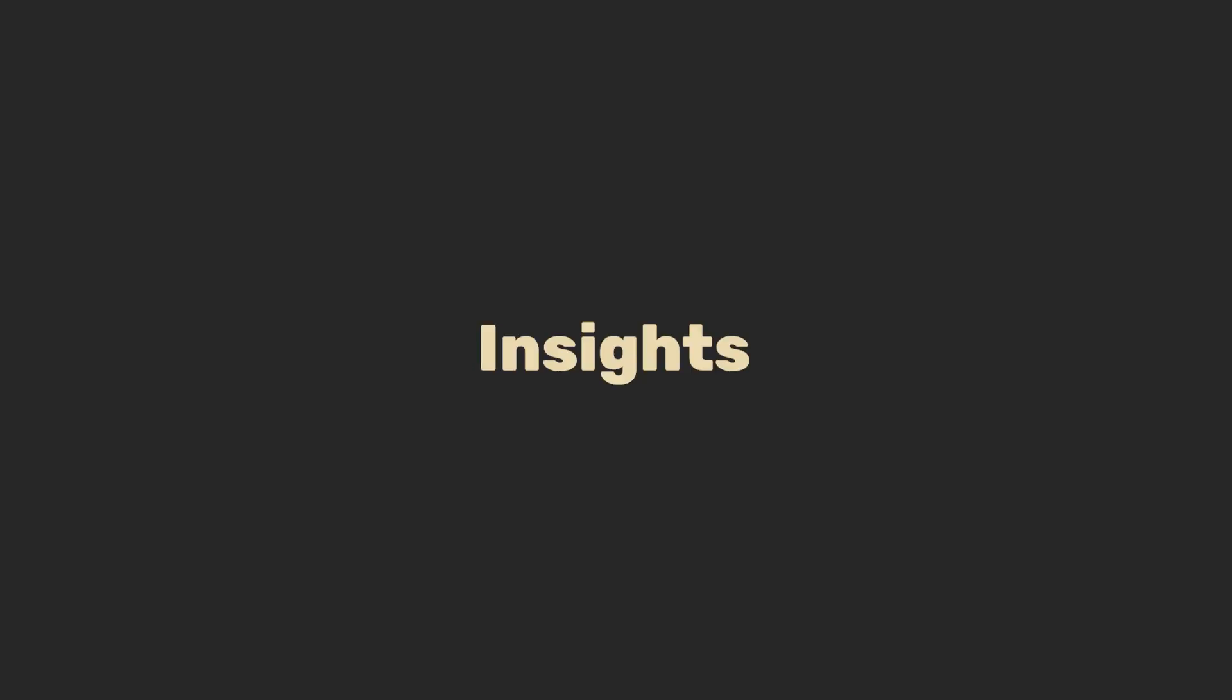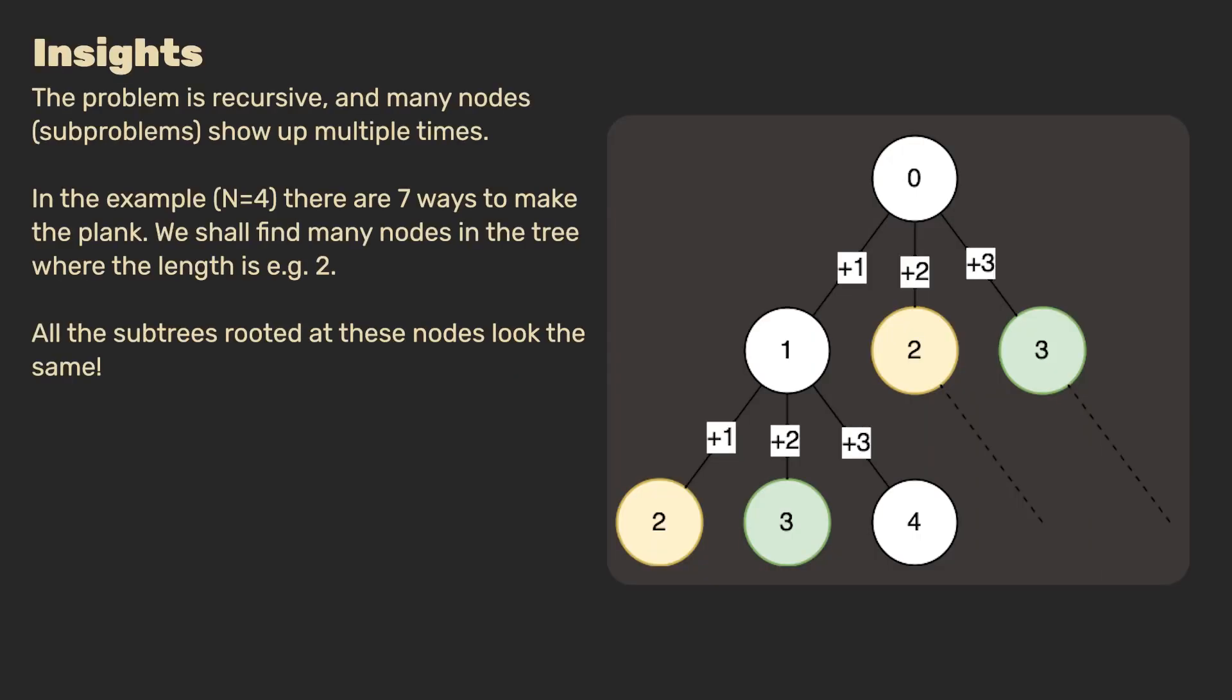Let's have a look at an insight which might already help you solve this problem on your own. The problem is recursive, and many nodes, which are essentially sub-problems, show up multiple times in the tree. In the example, where n is 4, there are 7 ways to make the plank. If we apply the algorithm, then we shall find many nodes in the tree where the length is, for instance, 2. Then by the nature of the problem, we shall find that all the sub-trees rooted at these nodes look the same. So why would we have to recompute the solution for every sub-tree each time that we encounter it?